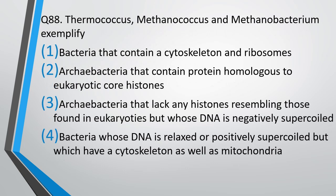Question No. 88. Thermococcus, Methanococcus, and Methanobacterium exemplify: bacteria that contain a cytoskeleton and ribosomes; archaebacteria that contain protein homologous to eukaryotic core histones; archaebacteria that lack any histone resembling those found in eukaryotes but whose DNA is negatively supercoiled; or bacteria whose DNA is relaxed or positively supercoiled but which have a cytoskeleton as well as mitochondria. The correct answer is option 3.